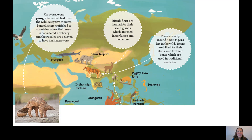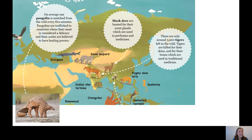We're going to talk about these animals and what is happening to them in the illegal wildlife trade. On average, one pangolin is snatched from the wild every five minutes — let that sink in. They are trafficked to countries where their meat is considered a delicacy and their scales are believed to have healing powers. 'Trafficked' means to illegally move an animal from one place to another. The musk deer are hunted for their scent glands, which are used in perfumes and medicines.